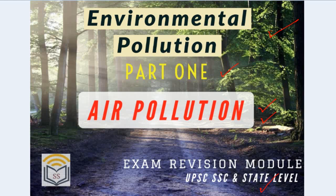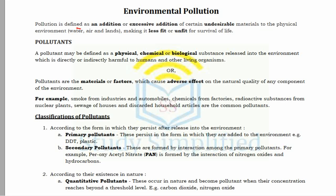So by definition, pollution is defined as an excessive addition of certain undesirable materials to the physical environment — which consists of water, air, and land — making them less fit or totally unfit for the survival of any life form. Pollutants are physical, chemical, or biological substances released into the environment, directly or indirectly, which are harmful to humans, organisms, and other living organisms. They can also be defined as materials or factors which cause adverse effects on the natural quality of any component of the environment.